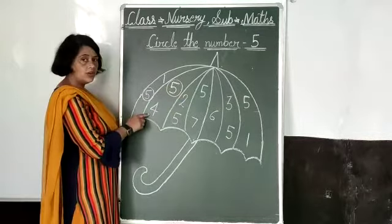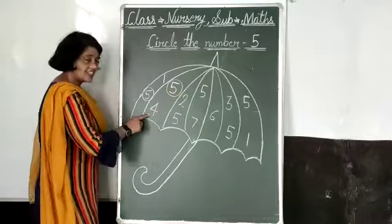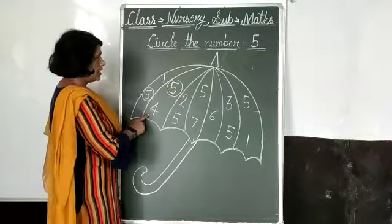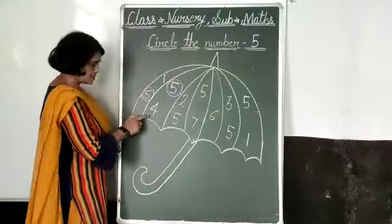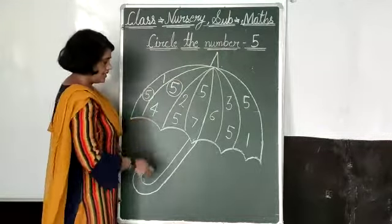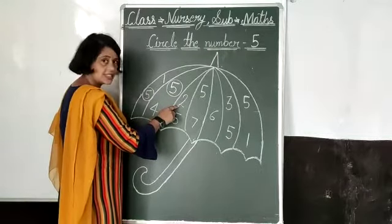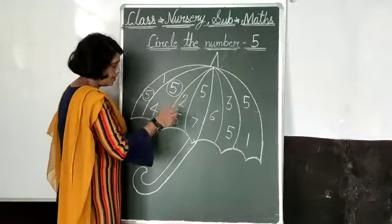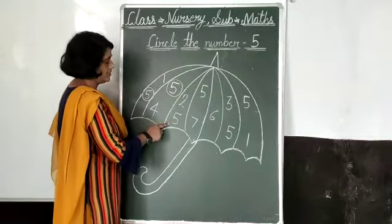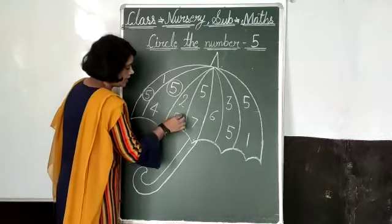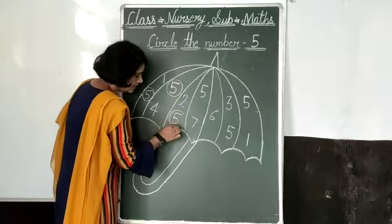This number 4 — no, not circle this number. We have 5 numbers to circle. This number 2 — not circle this number. This number 5 — yes, now circle this number.